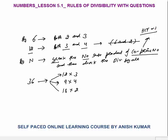It means there should be no common factor. For 36, the options are 12×3, 9×4, and 18×2. Are they co-prime? 18 and 2 have HCF of 2, so not co-prime. 12 and 3 have HCF of 3, so not co-prime. So whenever we check divisibility by 36, the number should be divisible by both 9 and 4.